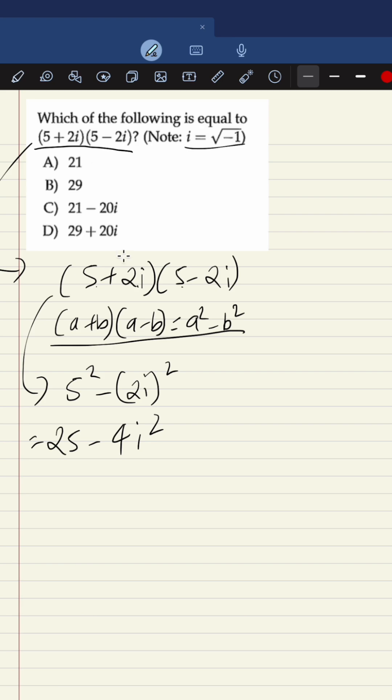It is given that i equals √(-1). So let's try to remove this root. For that we need to raise the power 2 on both sides, so i² equals...